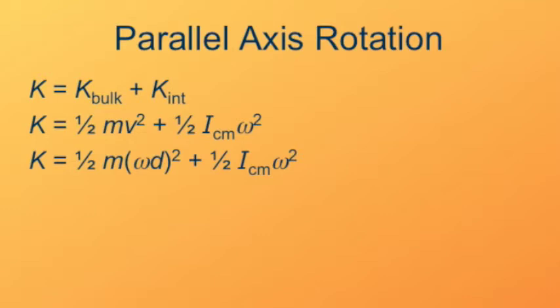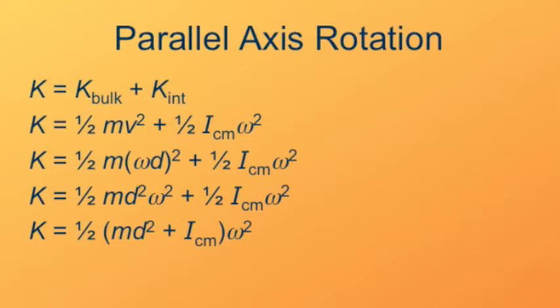Now I have two terms that have a factor of omega squared. Now we'll factor out the omega squared and we'll factor out the factor of one-half.